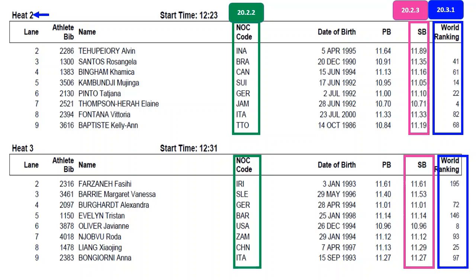This is the heat 2 and 3 chart list. Technical Rule 20.2.2 is followed to place different country athletes when a country participates with more than 1 athlete. Germany and Italy athletes are placed in different heats, i.e. heat 2 and 3. All the rules are followed as per heat 1.